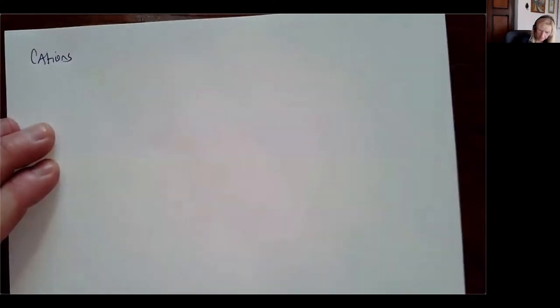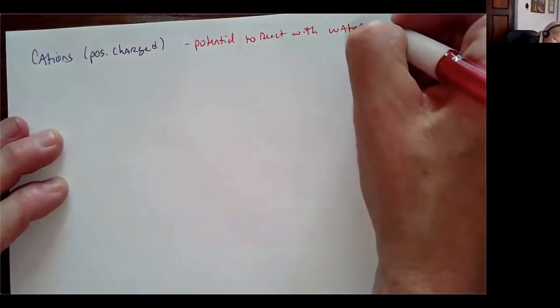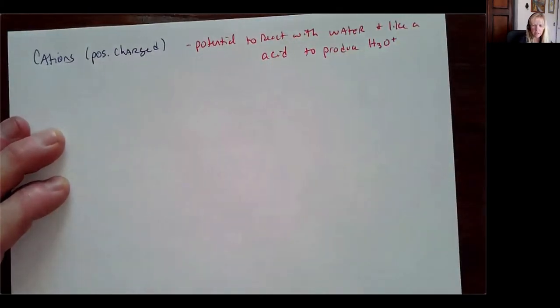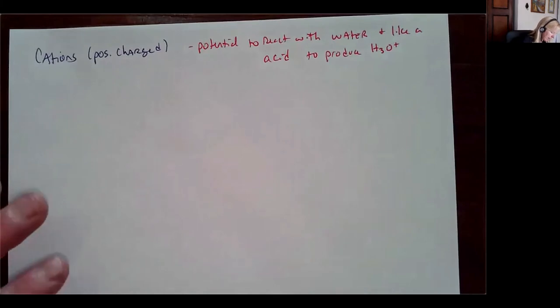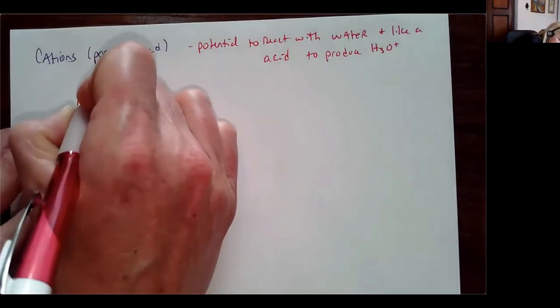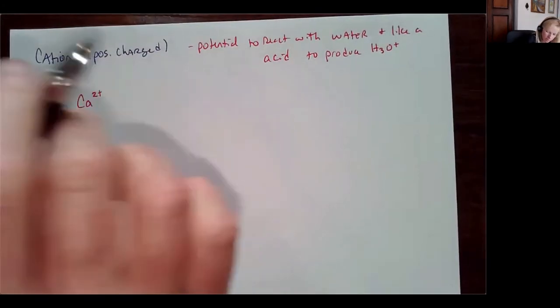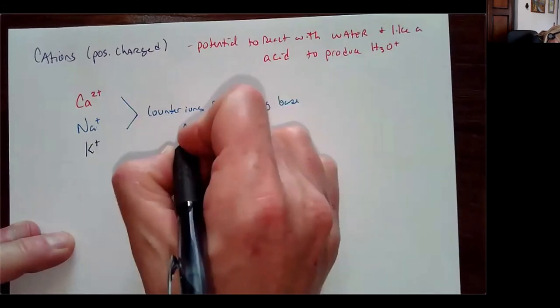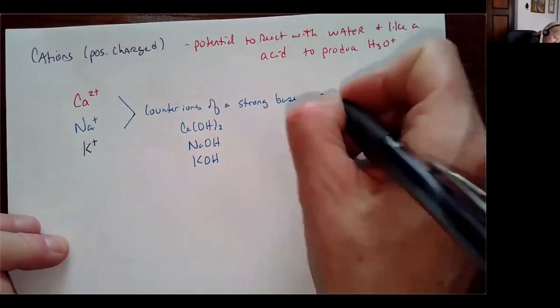Cations are different. Cations are positively charged and can potentially react with water to act like an acid and produce hydronium ion. So anions act like a base; cations act like an acid — if they meet the criteria. Counter ions of a strong base — like Ca²⁺, Na⁺, or K⁺ — are going to keep the solution neutral.